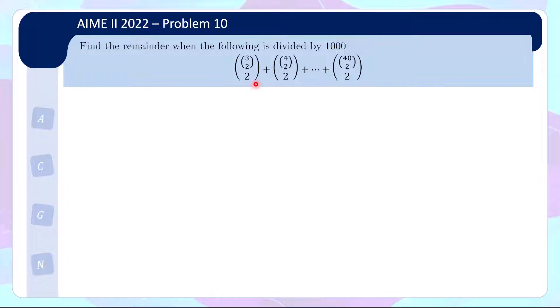It's basically to find the remainder when the following expression is divided by 1000. And the expression is 3 choose 2 choose 2, 4 choose 2 choose 2, added all the way to 40 choose 2 choose 2.